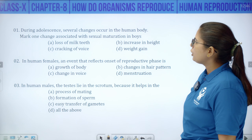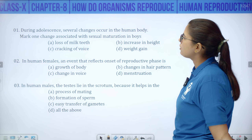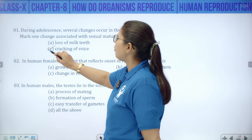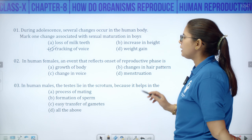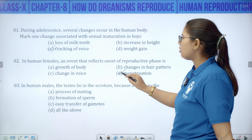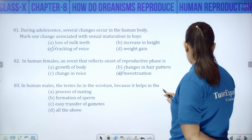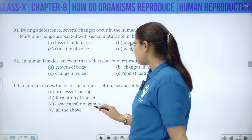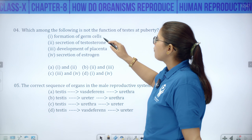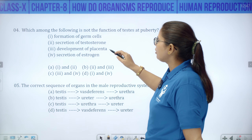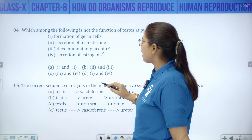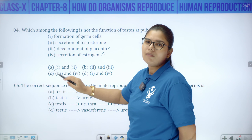During adolescence, several changes occur in the human body. Which change is associated with sexual maturation in boys? Cracking of voice — that is the answer. In human females, the event that reflects onset of the reproductive phase is mensuration. In human males, the testes lie in the scrotum because it helps in the formation of sperm. Which among the following is NOT a function of testes at puberty? Development of placenta and secretion of estrogen — both are female-related, so options 3 and 4 are not functions of testes.